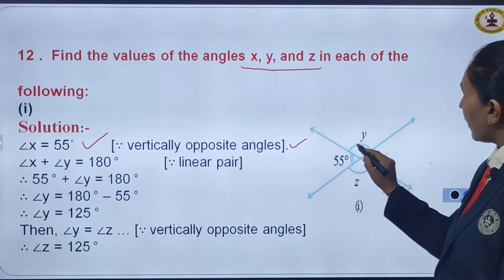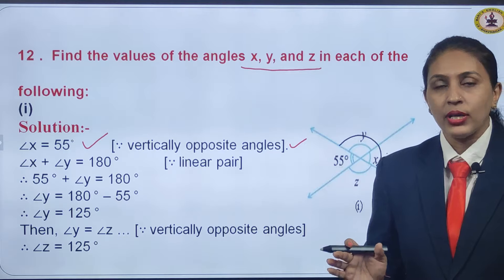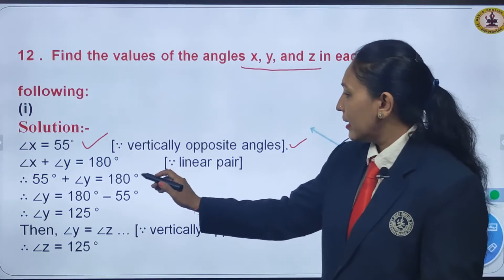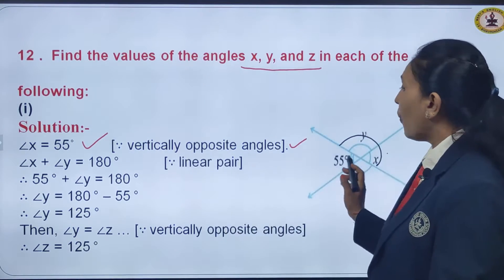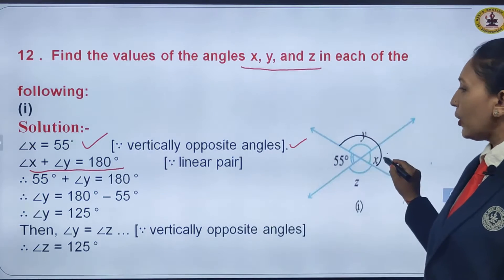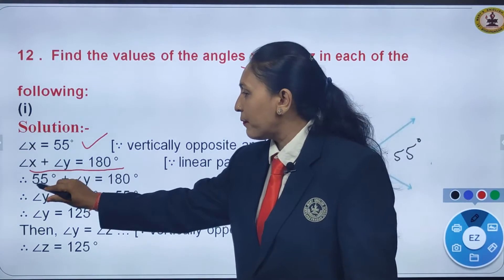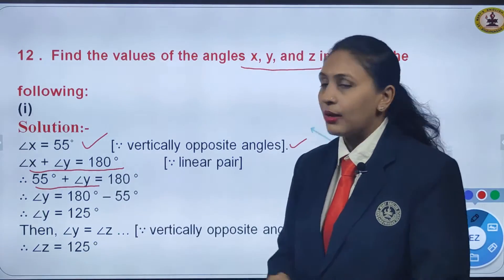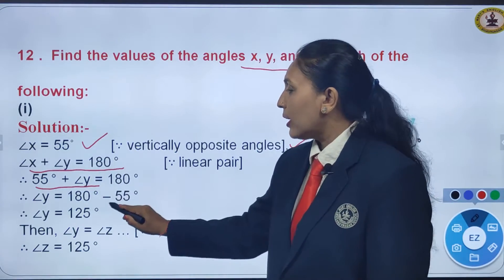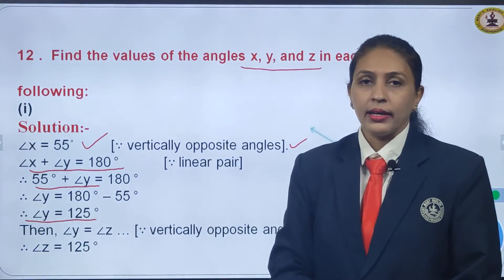Now let us go for angle y. You can see that angle x and y form a linear pair. The sum of a linear pair is 180 degrees. So angle x plus angle y equals 180 degrees. We got the value of x as 55 degrees, so substituting: 55 degrees plus angle y equals 180 degrees. Taking 55 to the other side, angle y equals 125 degrees.